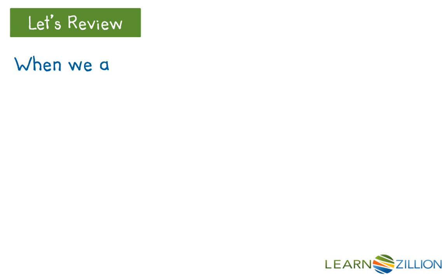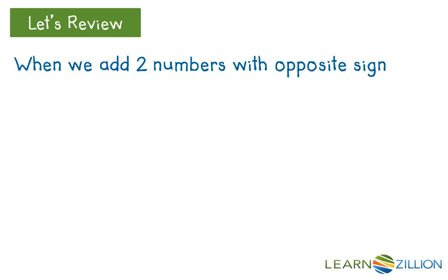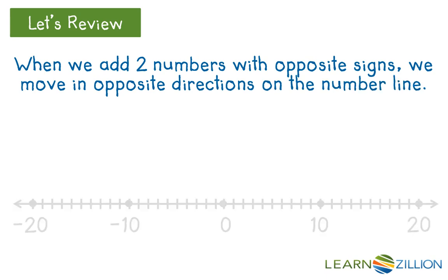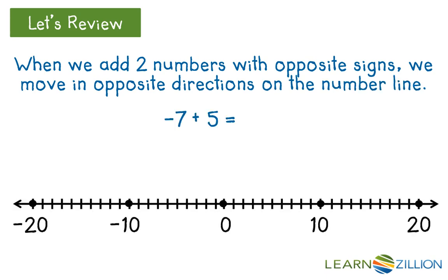When we add two numbers with opposite signs, we move in opposite directions on the number line. In the problem negative 7 plus 5, we move 7 units to the left and then 5 units to the right for an answer of negative 2.